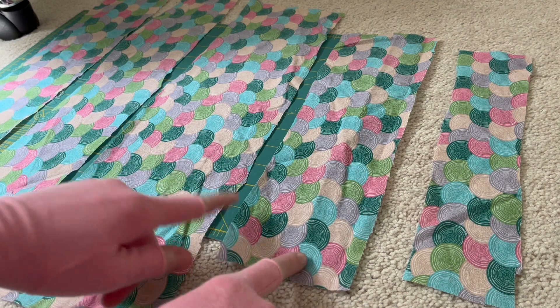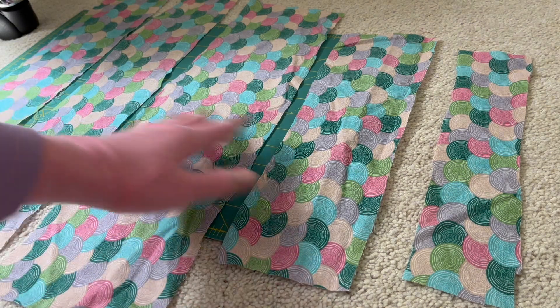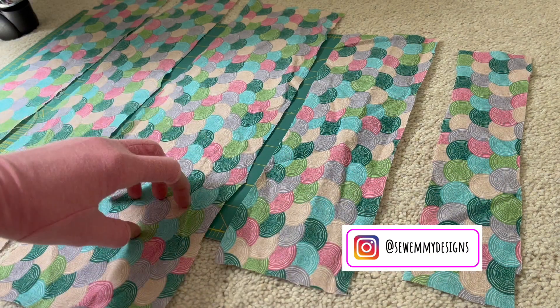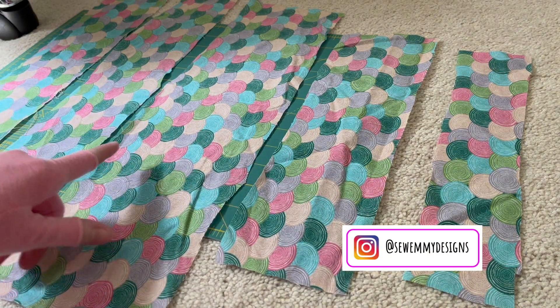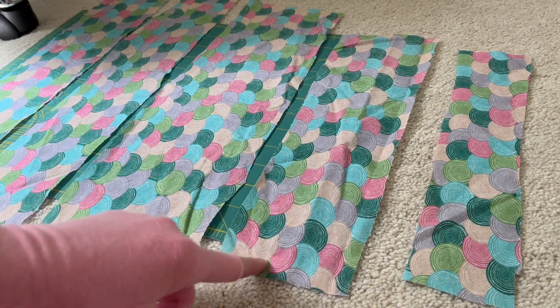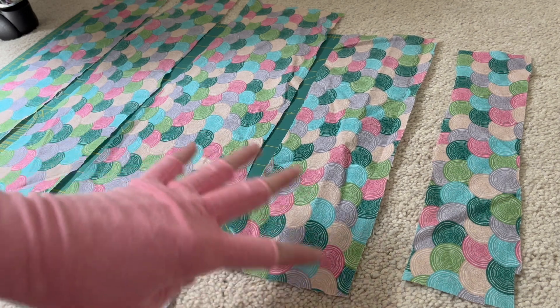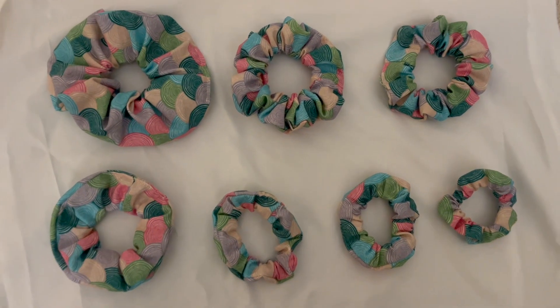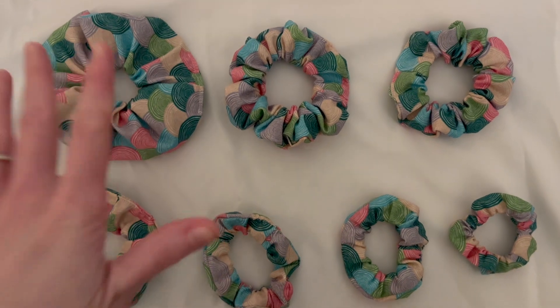Scrunchies can come in a whole lot of different sizes. The wider your fabric, the bigger your scrunchie is going to look, as well as the longer your fabric, the more full your scrunchie is going to look. So if you really want to make a small scrunchie for let's say a toddler, you are going to make that on the shorter side and probably not as wide, versus if you want to make an extra big scrunchie, that is going to be a lot wider and a lot longer.